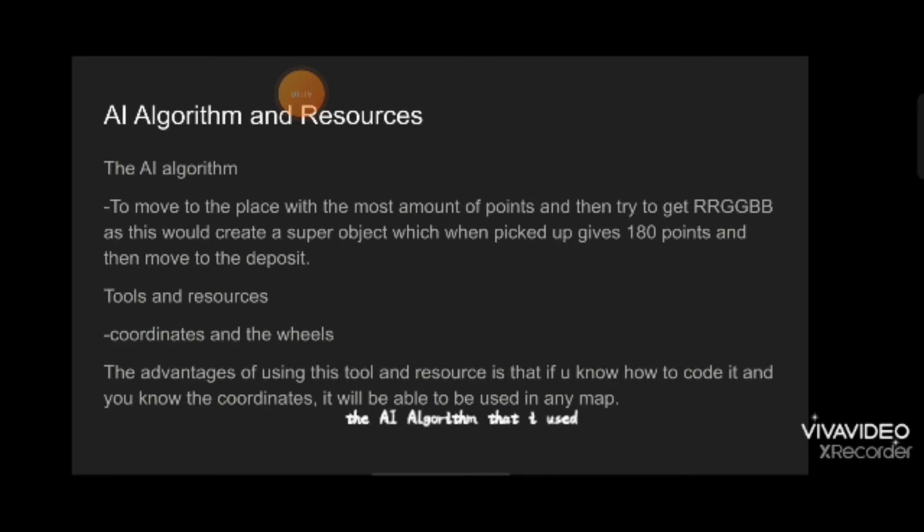The AI algorithm that I used is to make the robot move to the place with the most amount of points and then try to get RGGBV, as this would create a super object which when picked up gives 180 points.